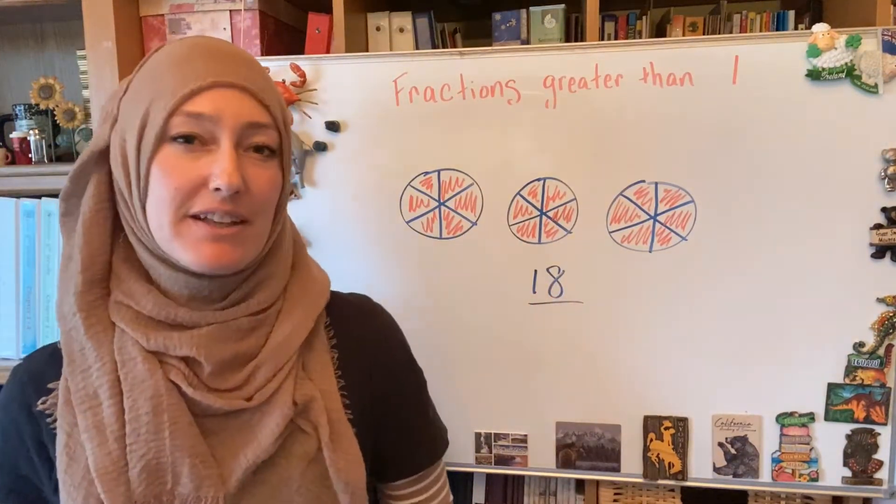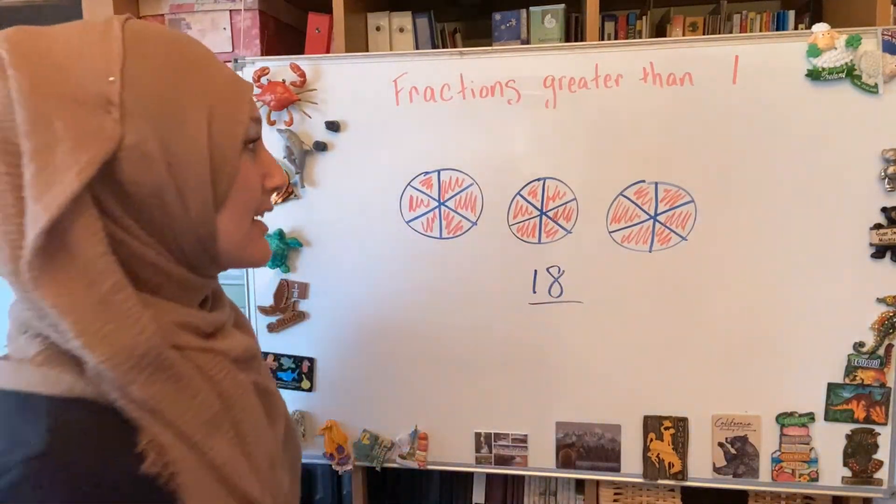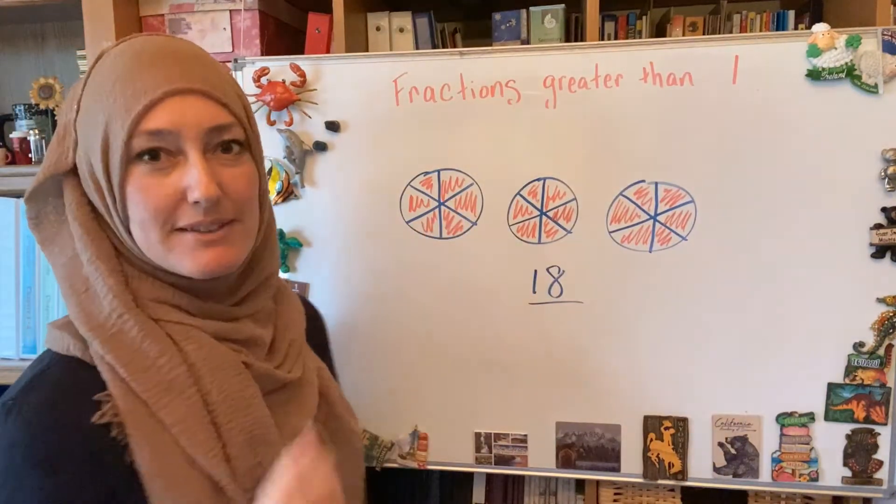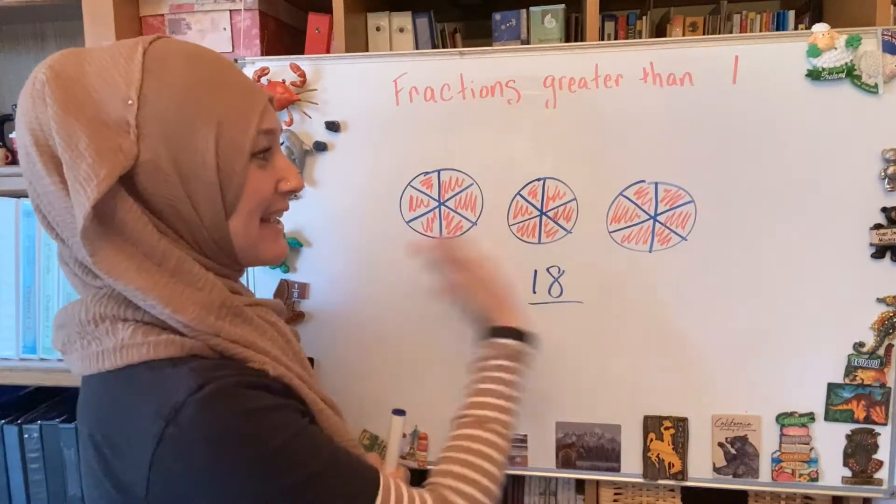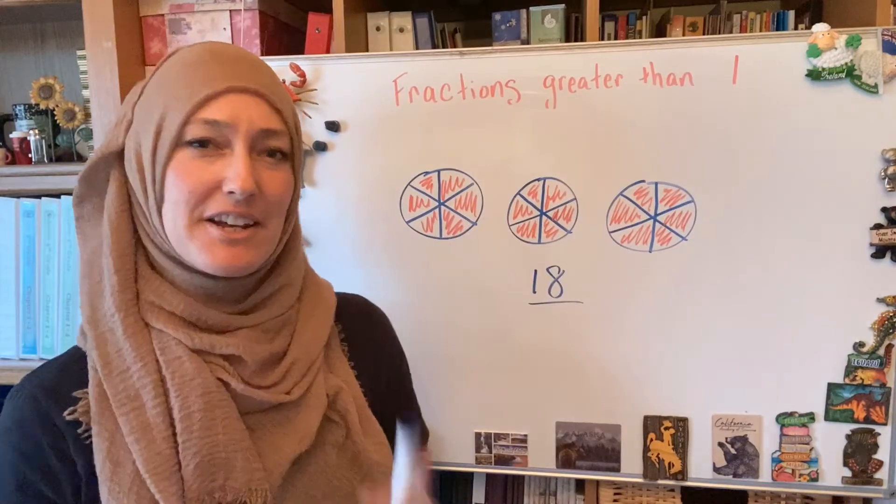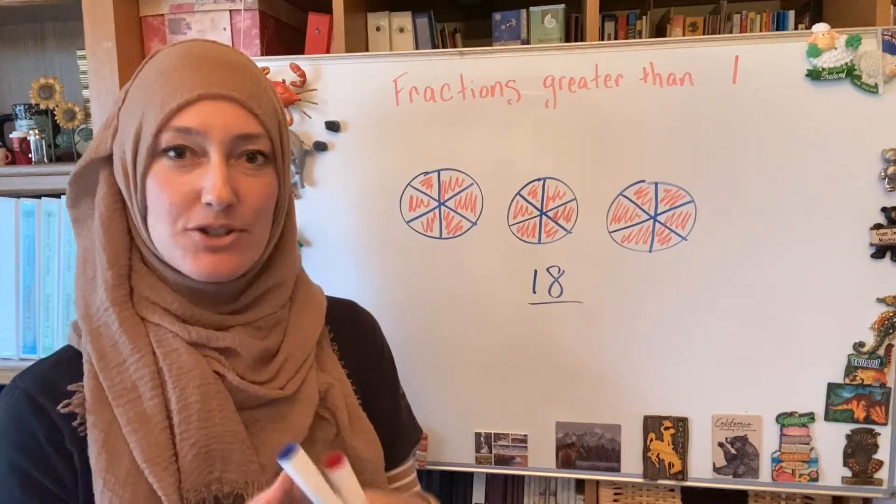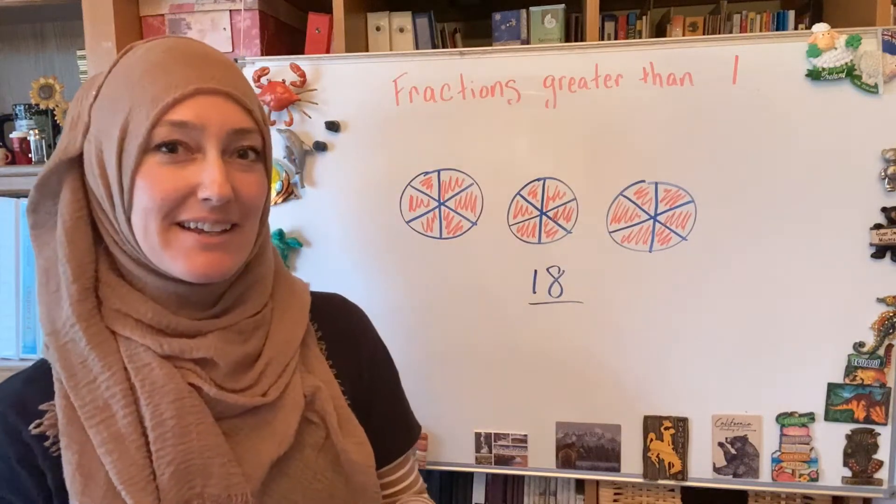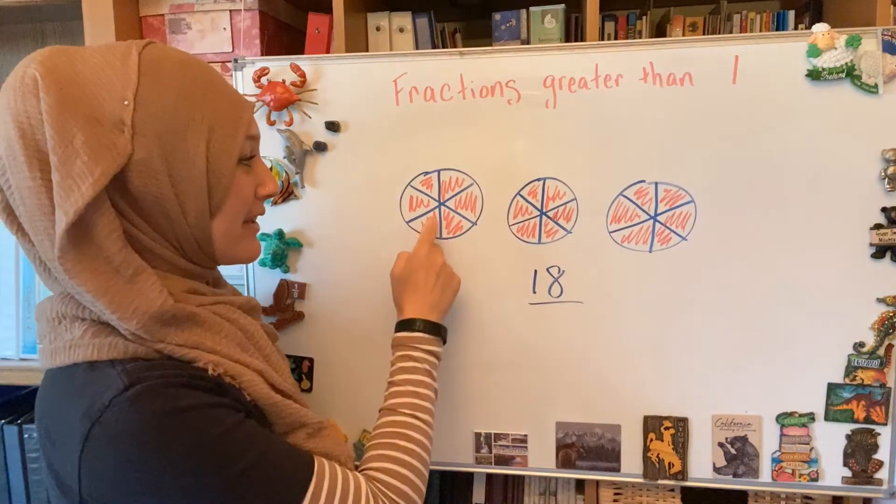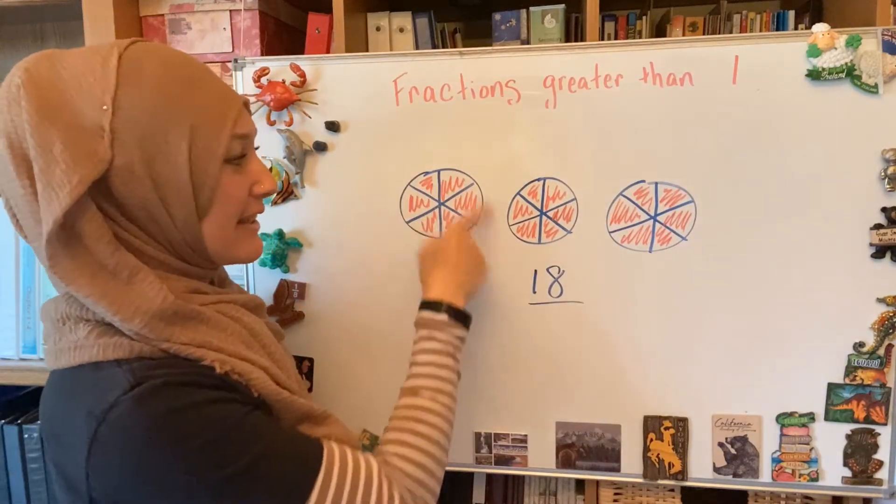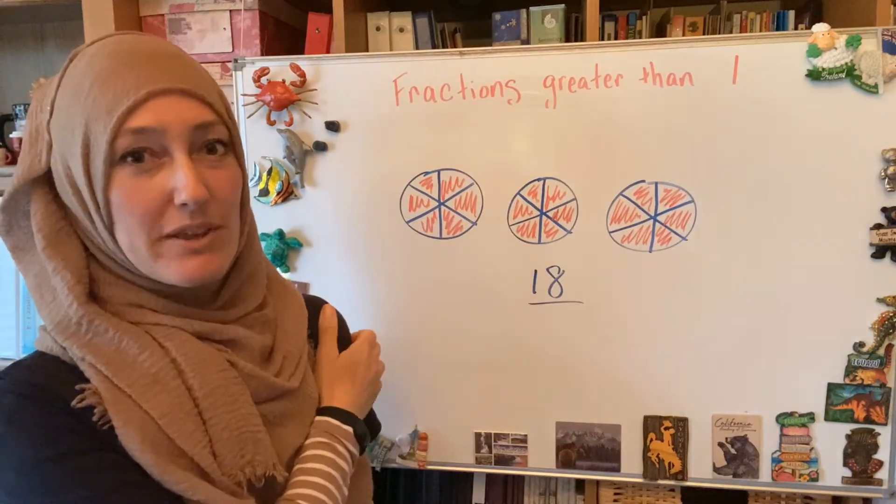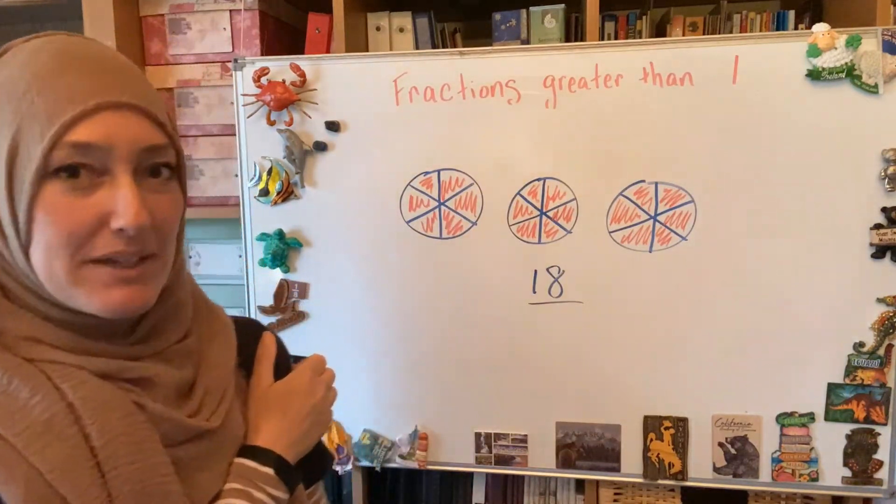And the denominator, think of it like this. Imagine these are pizzas. Right now, how many pieces do I have? I have 18 pieces. And if I said, all right, I'm going to give one piece to each person, how much does that each one person get? They get one out of six pieces. So they get one-sixth of the pizza.